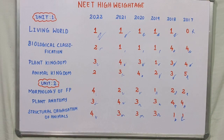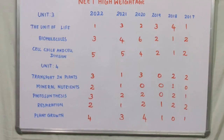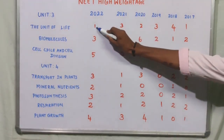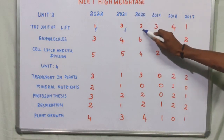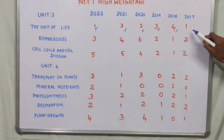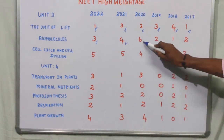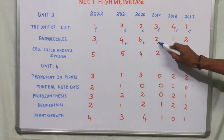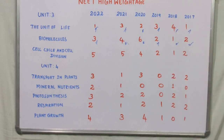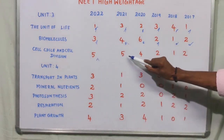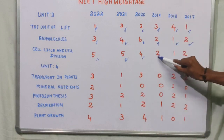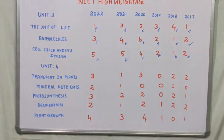Next, let's look at the last 6 years for Unit 3: Cell Biology, Plant Physiology, and Human Physiology. For the Unit of Life: 2022 had 1 question, 2021 had 3 questions, 2020 had 2 questions, 2019 had 3 questions, 2018 had 4 questions, and 2017 had 1 question. For Biomolecules: 2022 had 3 questions, 2021 had 4 questions, 2020 had 6 questions, 2019 had 2 questions, 2018 had 1 question, and 2017 had 2 questions. Cell Division: 2022 had 5 questions, 2021 had 5 questions, 2020 had 4 questions, 2019 had 2 questions, 2018 had 1 question, and 2017 had 2 questions.